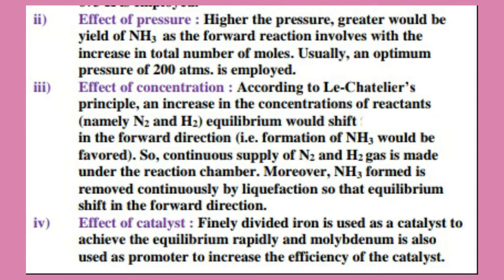Next is the effect of concentration. According to Le Chatelier's Principle, an increase in the concentration of reactants — namely Nitrogen and Hydrogen — means the equilibrium would shift in the forward direction; that is, formation of Ammonia gas would be favored. So, a continuous supply of Nitrogen and Hydrogen gas is maintained in the reaction chamber so that higher concentrations of reactants are sustained. By maintaining higher concentrations of Nitrogen and Hydrogen gas, the reaction shifts toward the forward direction. Additionally, Ammonia formed is removed continuously by liquefaction so that the equilibrium shifts further in the forward direction.